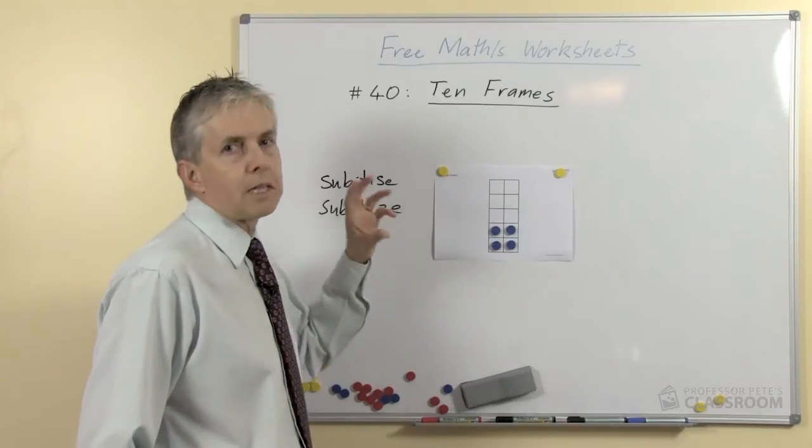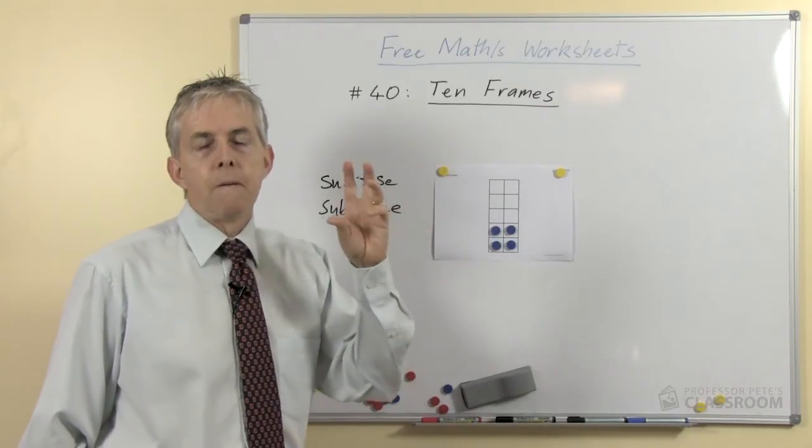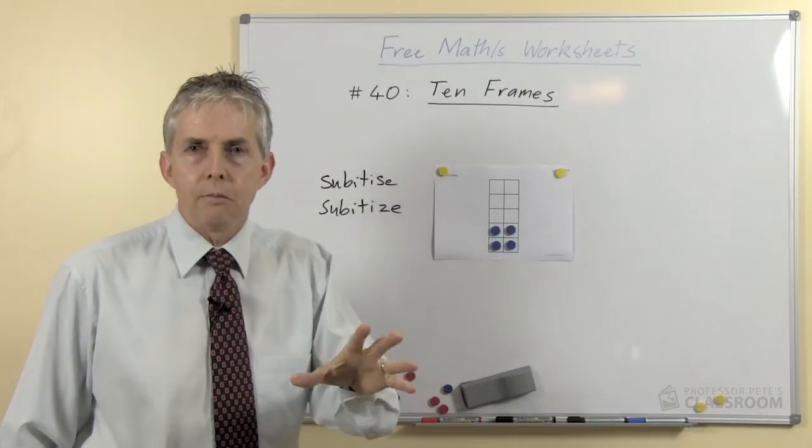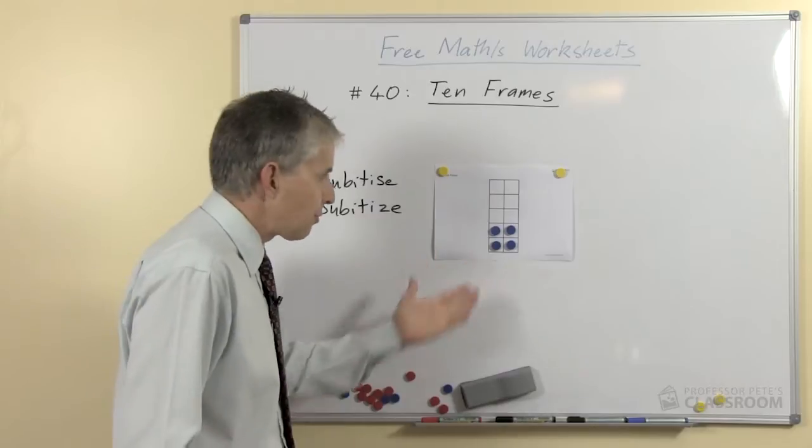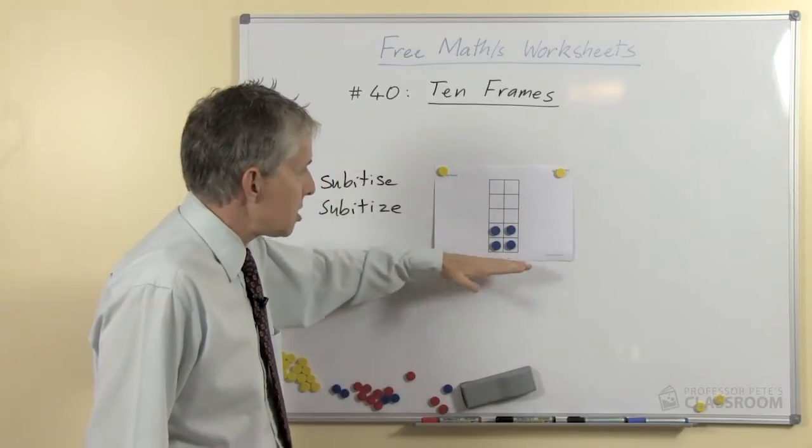It's the skill of being able to count a group of objects by just looking at them. So it's effectively not really counting, it's recognizing how many there are and just going, that's four.